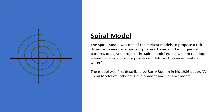The spiral model was the first software development model to propose an incremental and risk-based approach to software building. It was only in the 1990s that an incremental approach to software building was tried. From this perspective, the spiral model could be categorized as a model far ahead of its time.